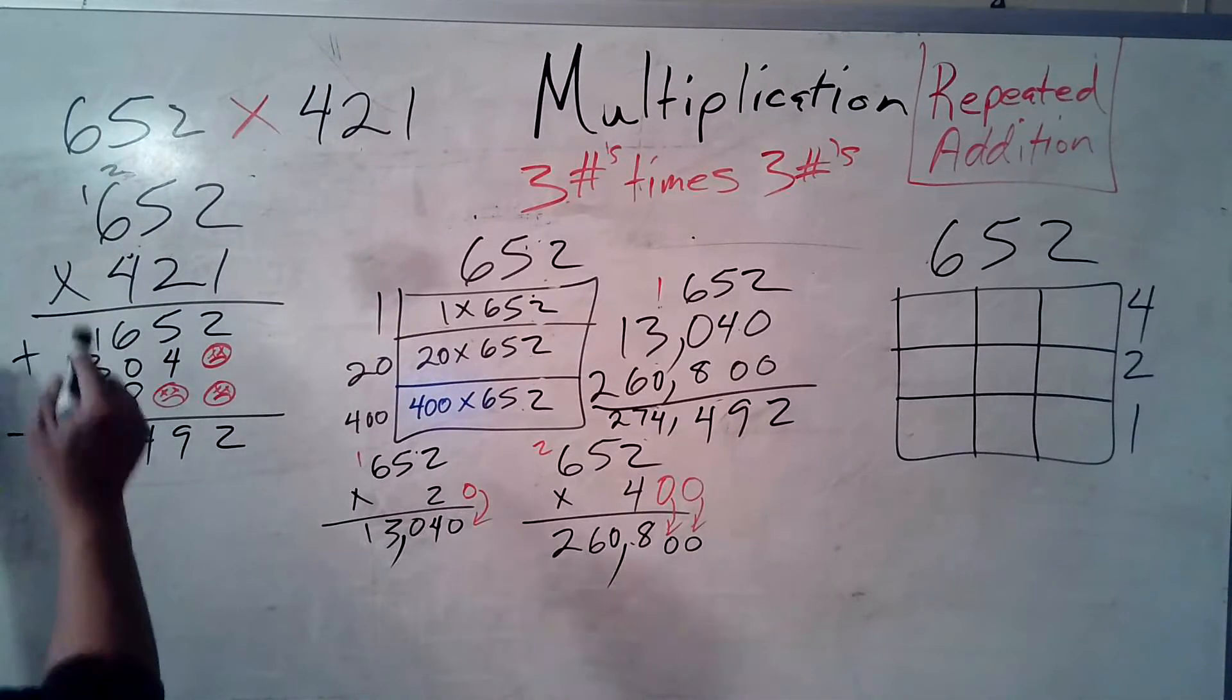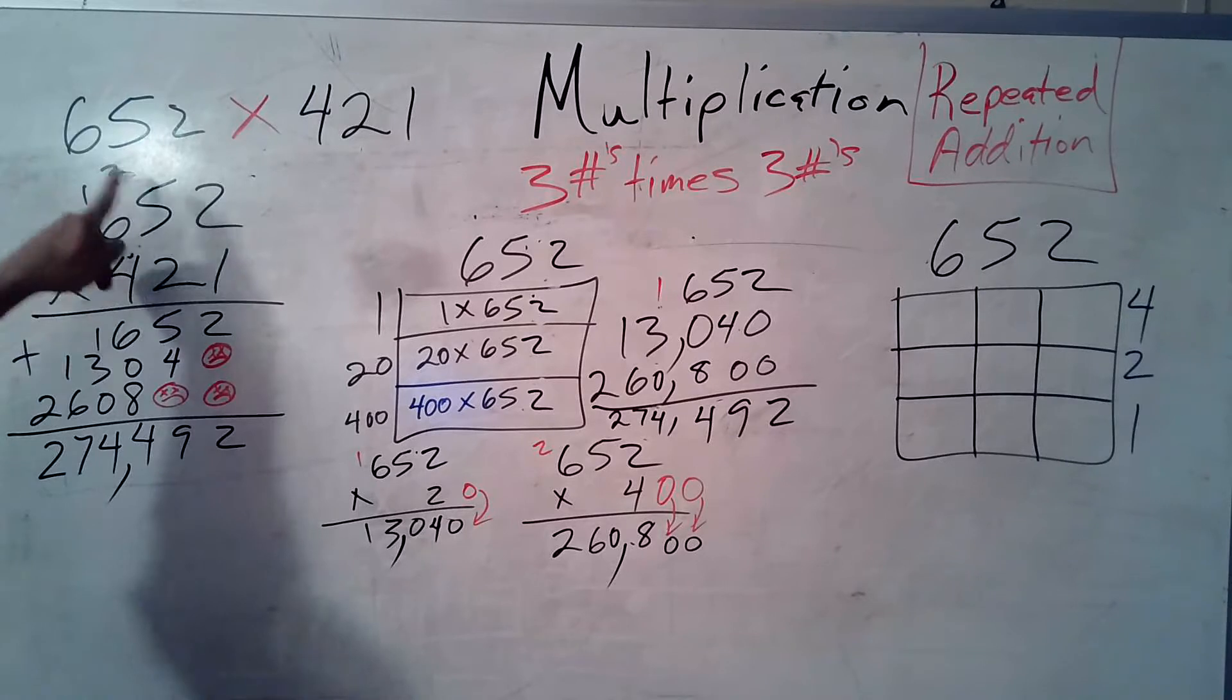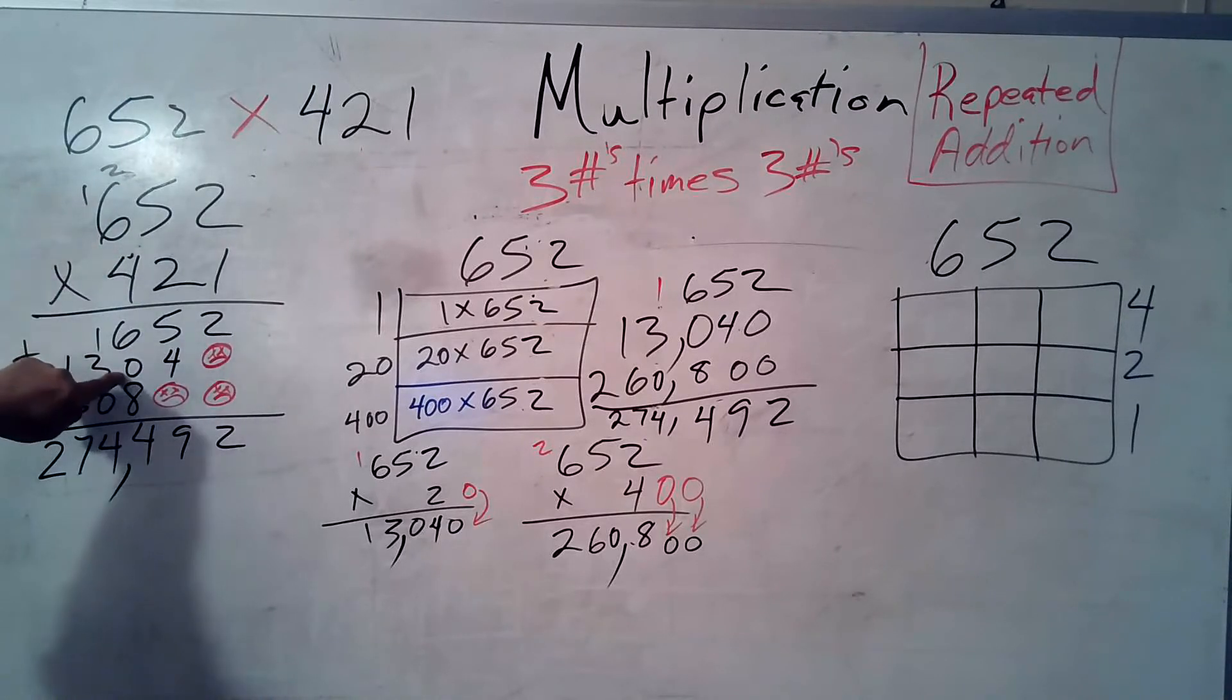One times anything is that anything. So there's my 652. Uh-oh, don't forget your zero placeholder dead guy. All right, so 2 times 2 is 4. 2 times 5 is 10. Write down the zero.